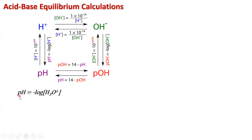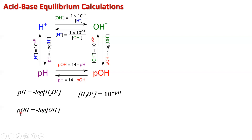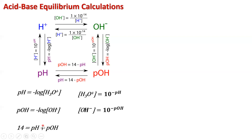Just to go through the equations again: pH equals the negative log of the hydronium ion. The hydronium ion is 10 to the negative pH. If we want pOH, we take the negative log of hydroxide. If we want hydroxide, it's 10 to the negative pOH. pH plus pOH equals 14. Ka times Kb equals Kw.